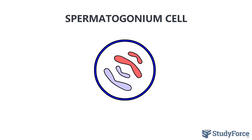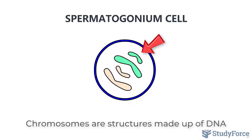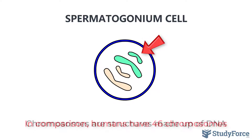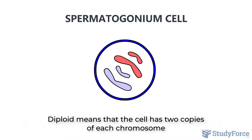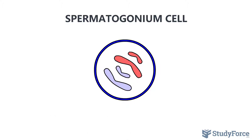Spermatogonia have a complete set of chromosomes. As you can see in the illustration, this particular organism has four chromosomes in total, two from each parent, and so are considered diploid. Eventually, this number will be halved once a sperm cell is produced, so expect to see sperm cells with two chromosomes only.